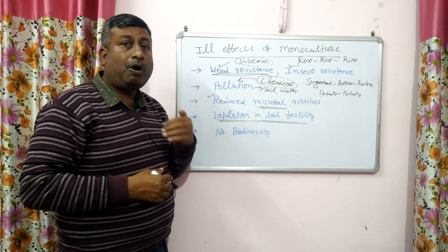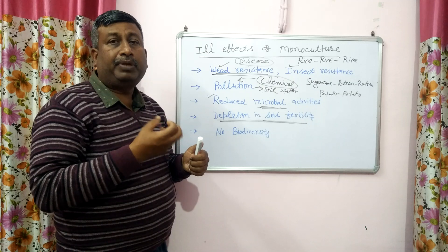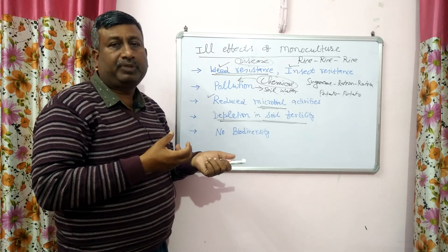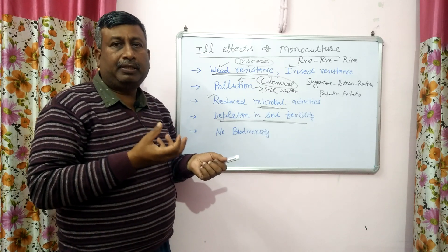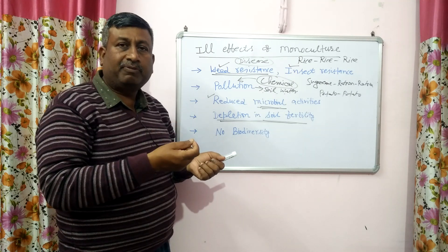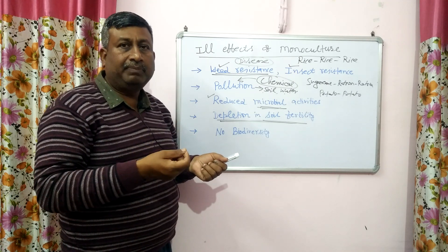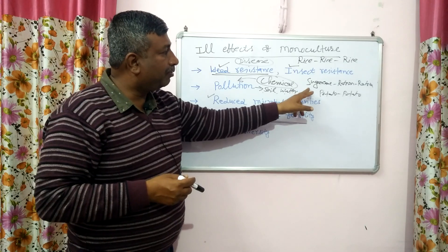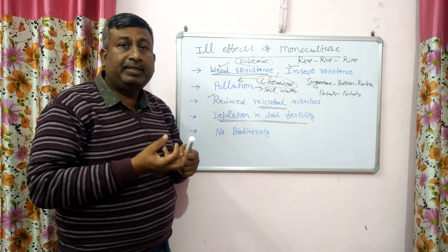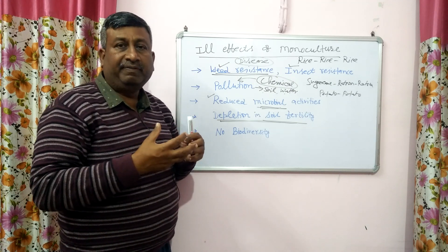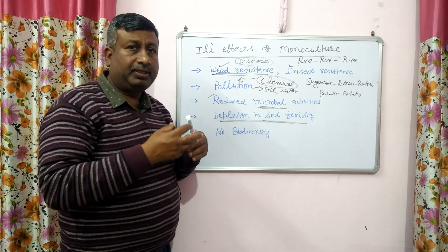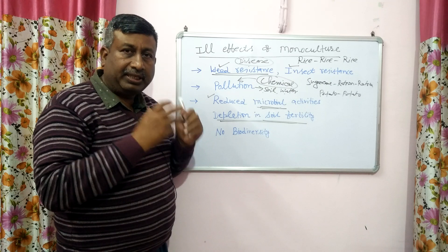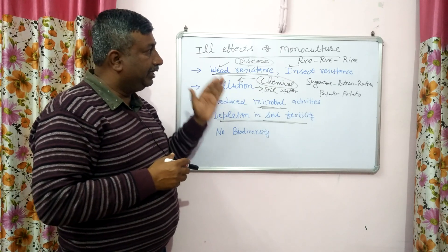Another problem is that a particular crop's residue decomposes and secretes particular types of chemicals. Each specific type of residue secretes different chemicals — due to rice straw decomposition, different chemicals are secreted; in case of sunflower, different chemicals; in case of wheat, different chemicals. But when there is continuously the same crop — for example, sugarcane — particular chemicals are secreted, they accumulate in the soil, and they cause allelopathic effects or harmful effects on microbial activity and soil fertility.